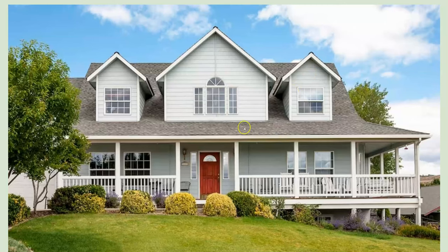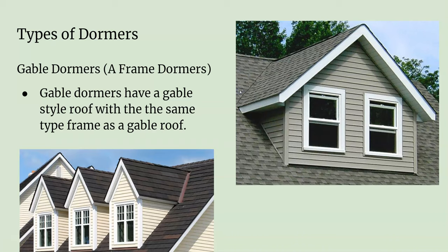This house, on the other hand, has huge dormers, and it creates second-floor bedrooms. These are definitely functional dormers. The most basic type is called gable dormers, and they have two gable slopes on top of the larger sloping roof. They can be the same pitch or a completely different pitch — really up to the design.